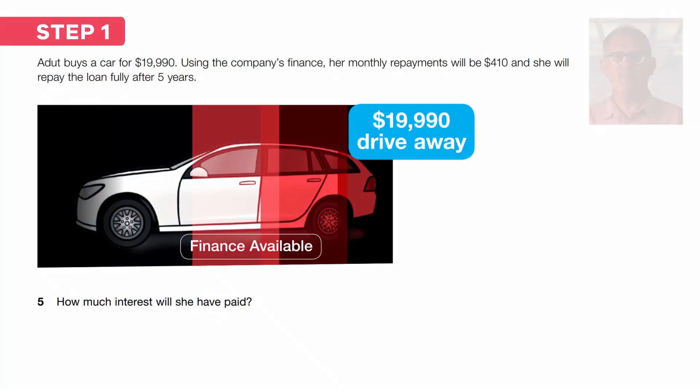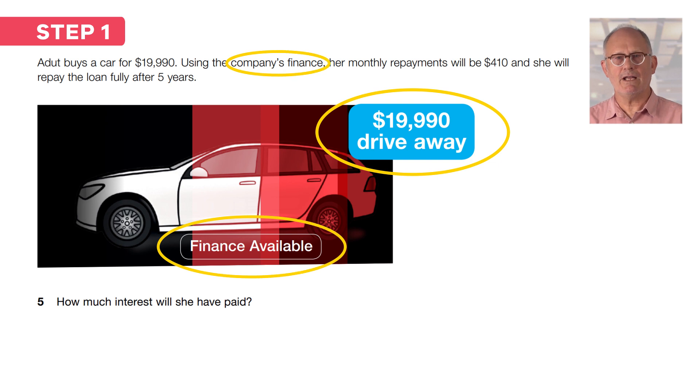First, remember to read the problem carefully so that you understand what you are being asked to do. In this problem the car costs $19,990, but Adut decides to use the company's finance which means she will have to pay $410 a month for the next five years. The question asks how much interest she will pay, which will be the extra amount over the actual cost of the car, the $19,990.